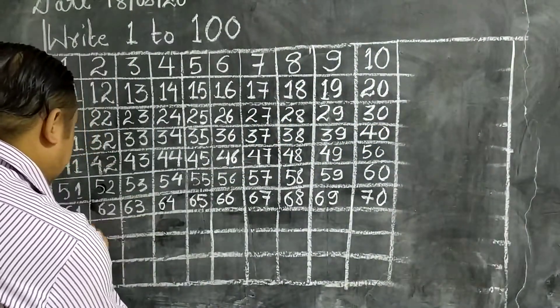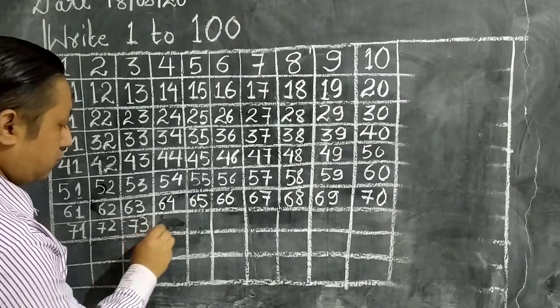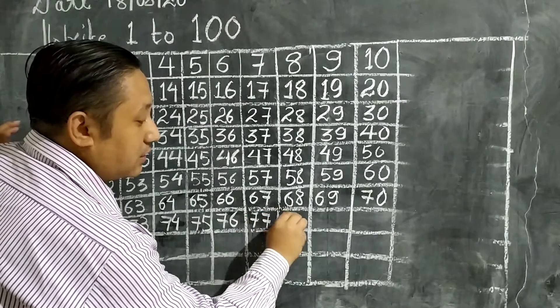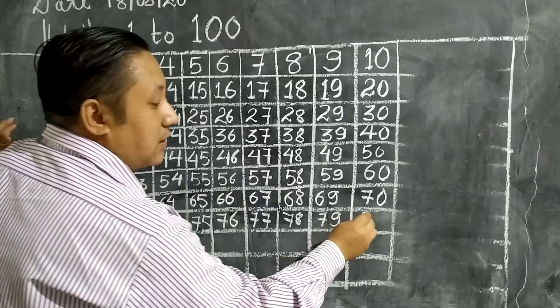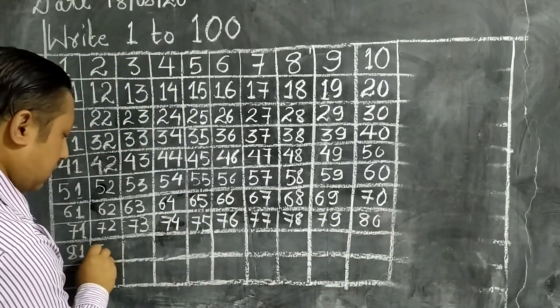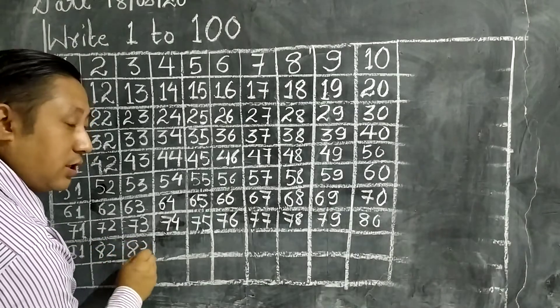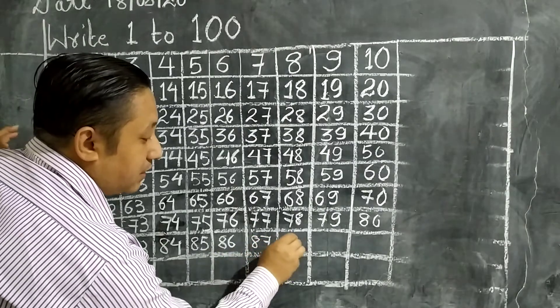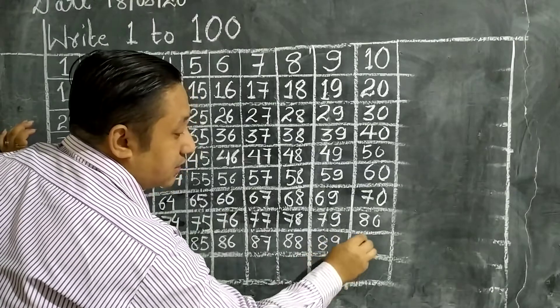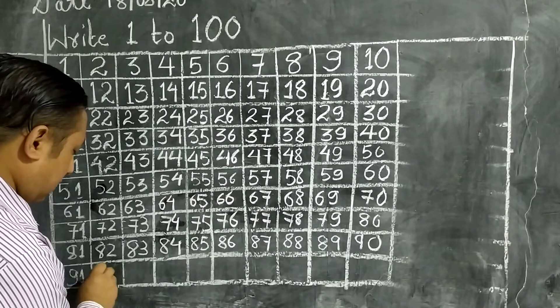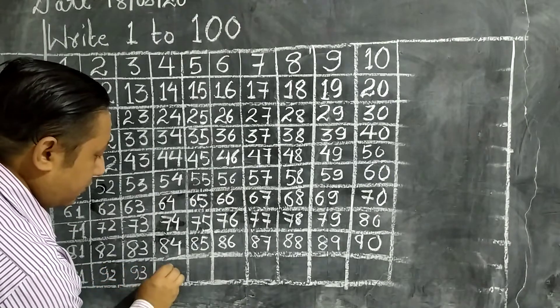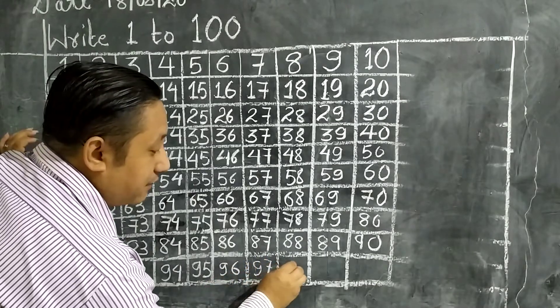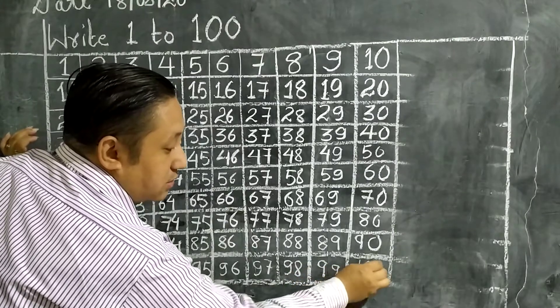Again I'm going to write. Seven one, seventy-one. Seven two, seventy-two. Seven three, seventy-three. Seven four, seventy-four. Seven five, seventy-five. Seven six, seventy-six. Seven seven, seventy-seven. Seven eight, seventy-eight. Seven nine, seventy-nine. Eight zero, eighty. Eight one, eighty-one. Eight two, eighty-two. Eight three, eighty-three. Eight four, eighty-four. Eight five, eighty-five. Eight six, eighty-six. Eight seven, eighty-seven. Eight eight, eighty-eight. Eight nine, eighty-nine. Nine zero, ninety. Nine one, ninety-one. Nine two, ninety-two. Nine three, ninety-three. Nine four, ninety-four. Nine five, ninety-five. Nine six, ninety-six. Nine seven, ninety-seven. Nine eight, ninety-eight. Nine nine, ninety-nine. One hundred, one hundred. So this is how you have to write.